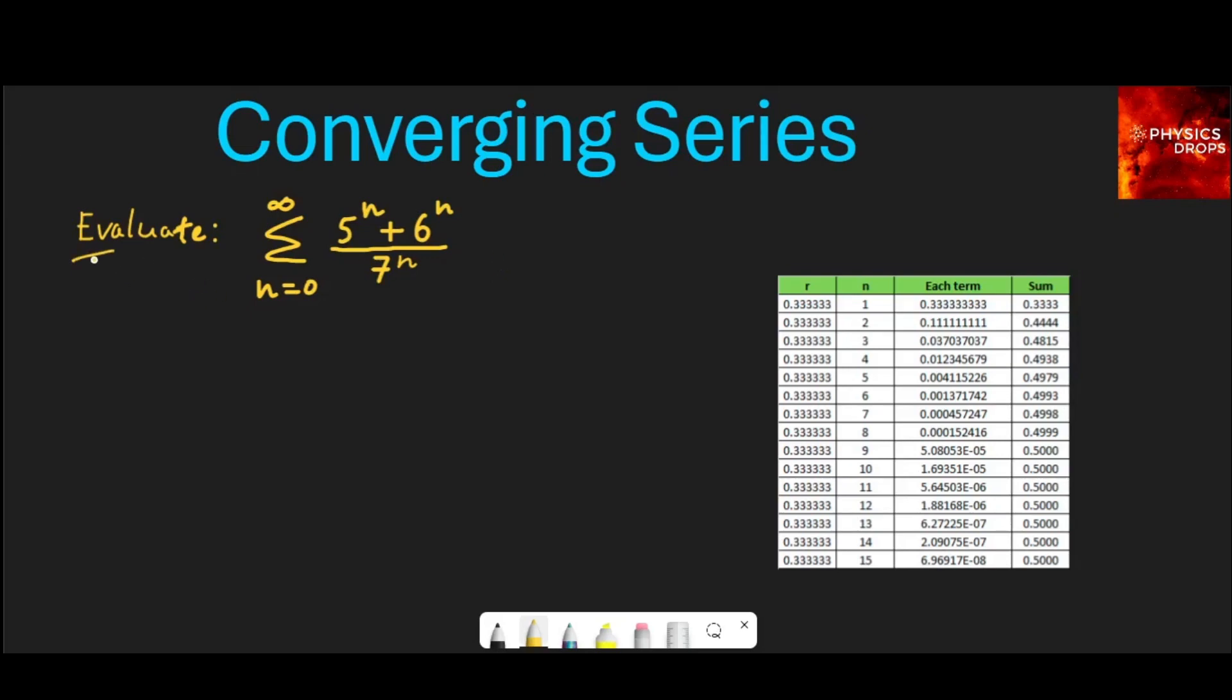The question here is to evaluate or find the value of the sum given here, which is 5^n plus 6^n upon 7^n. Let us understand a bit on geometric series before solving this.